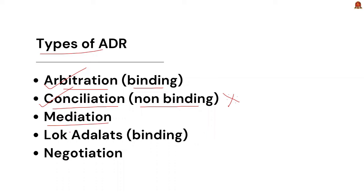The third type is mediation, where a mediator facilitates negotiation between the parties to help them reach a common resolution. The mediator does not impose a decision on the parties but assists in communication and settlement. Then there is Lok Adalat — an informal forum for resolving cases efficiently, and its decisions are final and binding. Next is negotiation, a direct informal process where the parties discuss their issues to reach a settlement without third-party intervention. These are the five types of alternate dispute resolution mechanism in India.